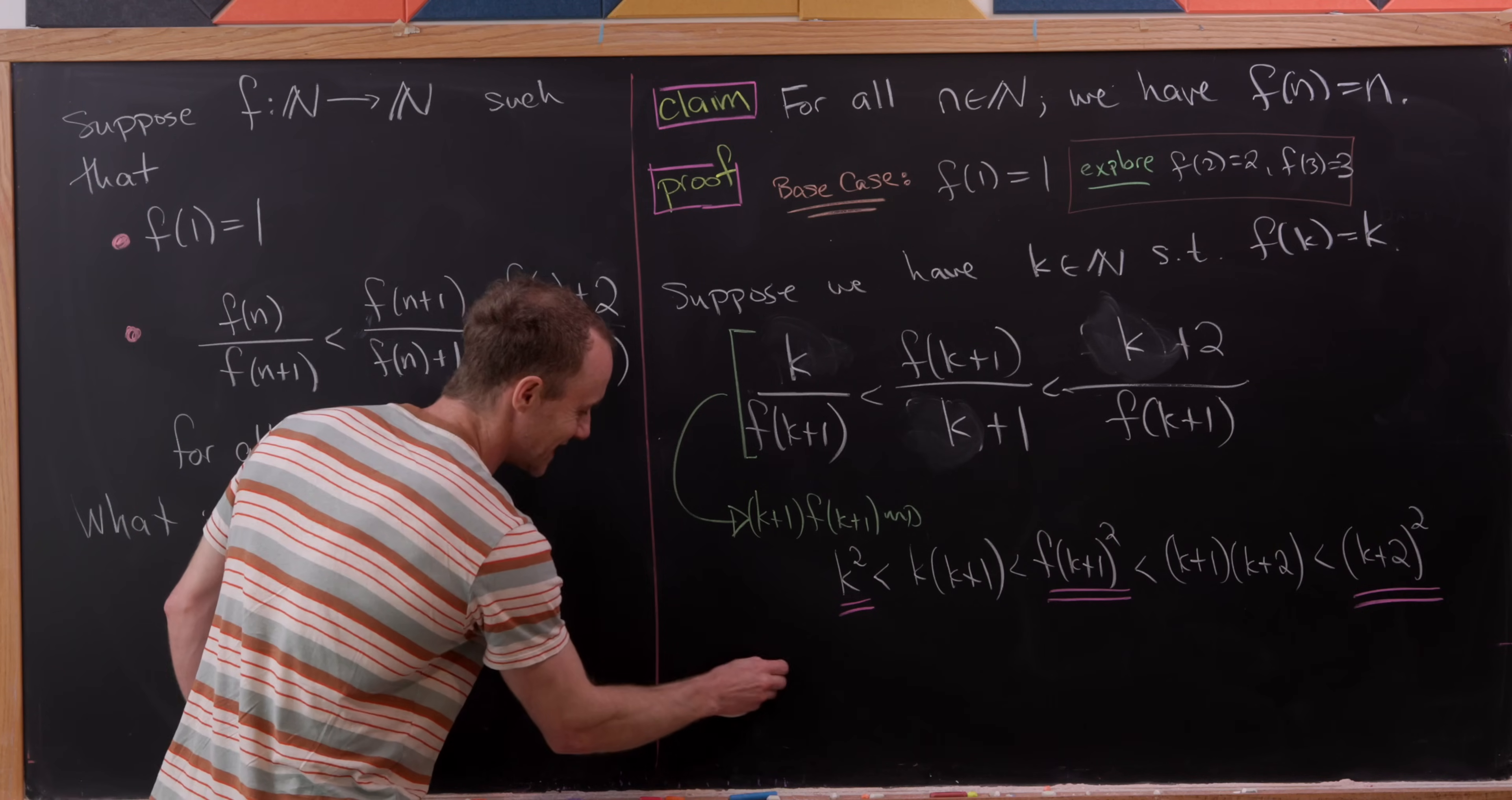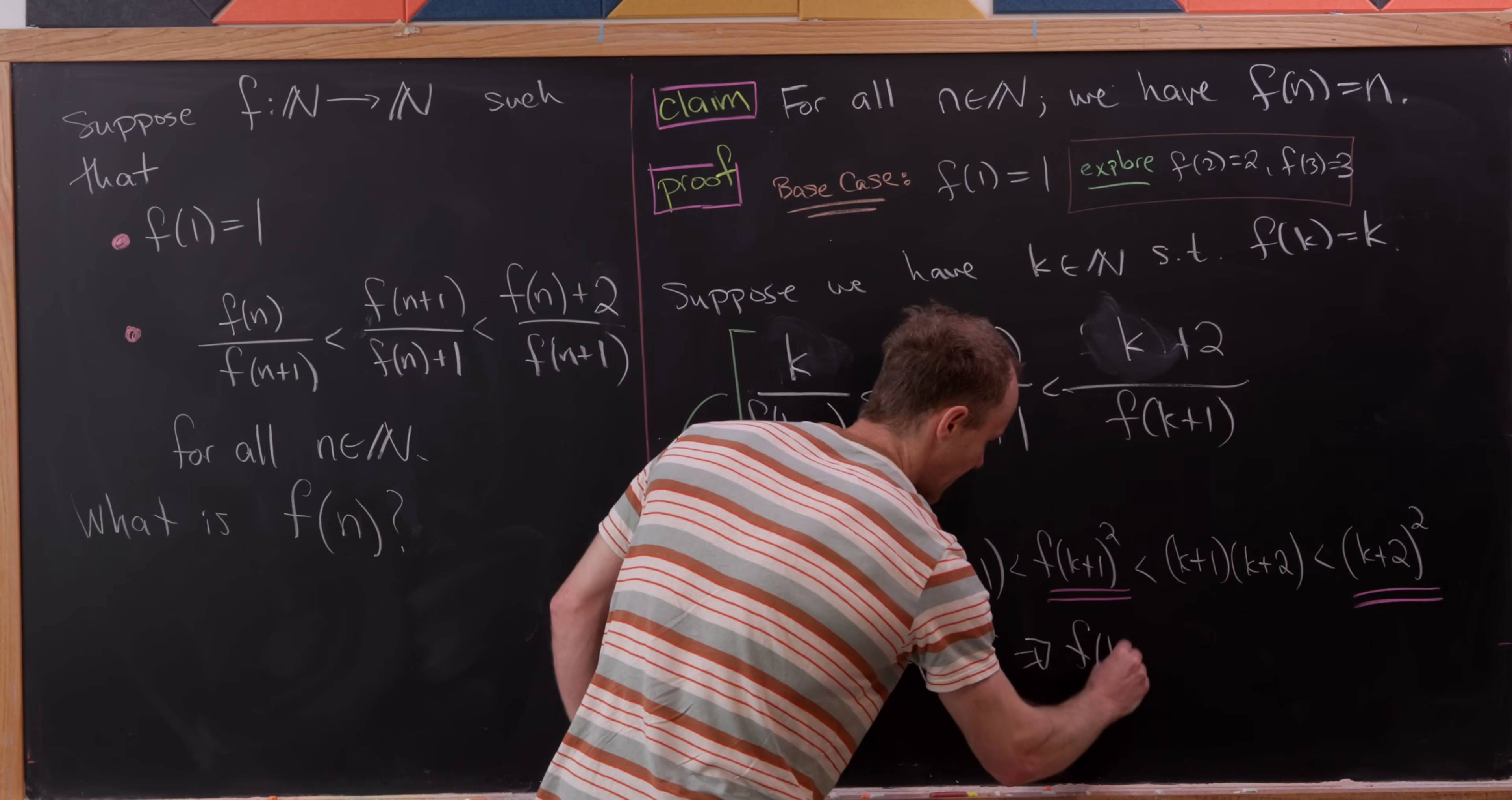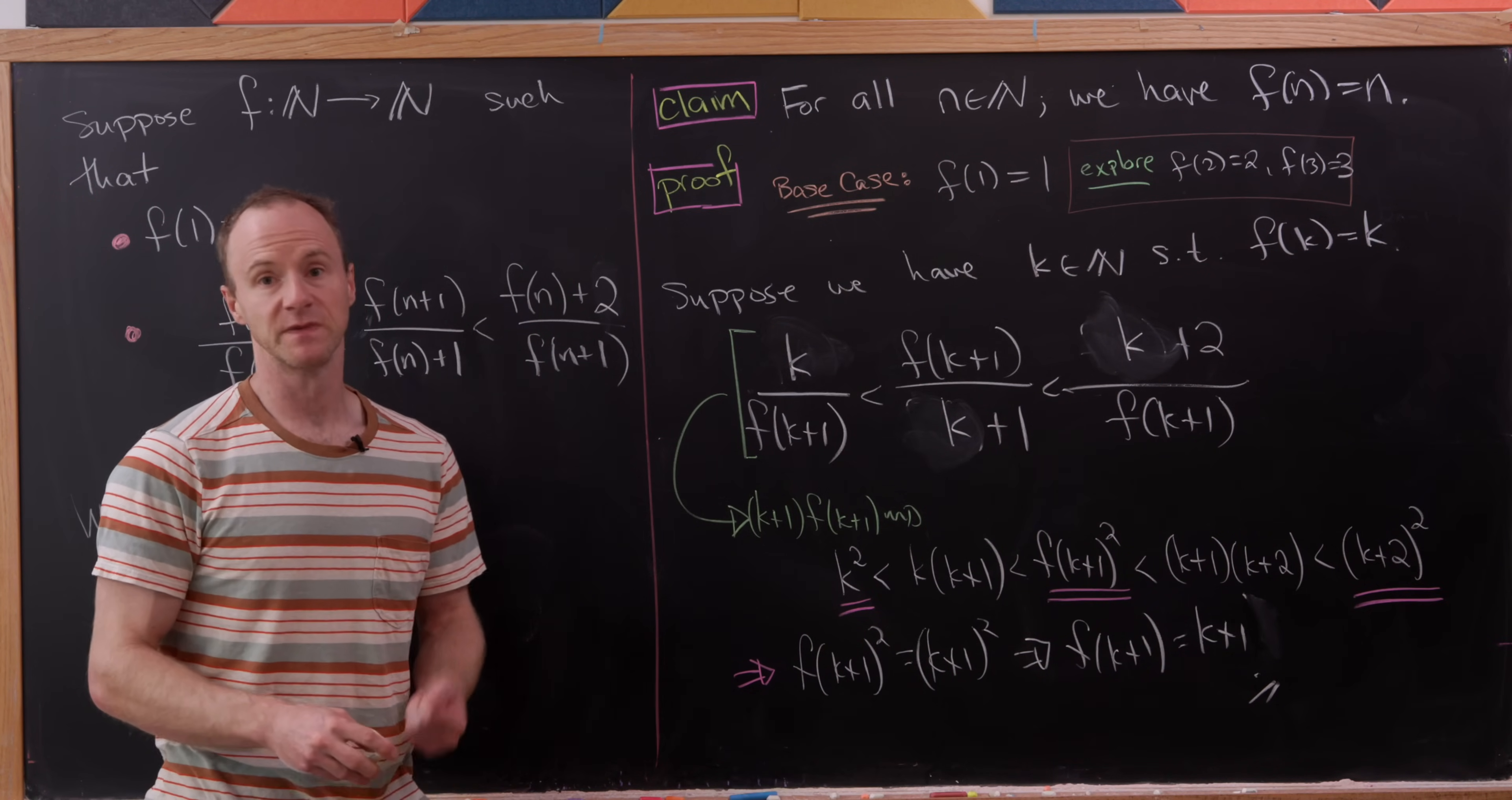But there's a single perfect square between those two, and of course it's k plus one squared. So we have f of k plus one squared is k plus one squared, and thus f of k plus one is k plus one. But like I said before, that's where we needed to end in order to finish this proof by induction. And that's a good point.